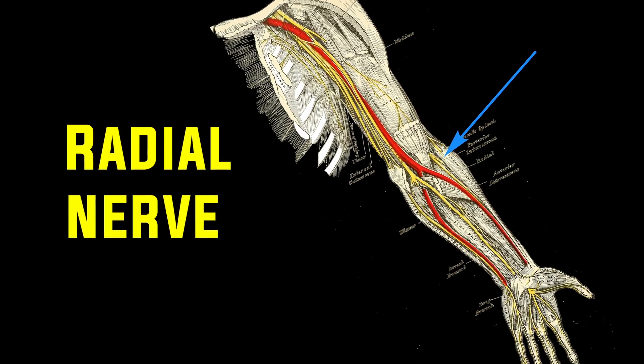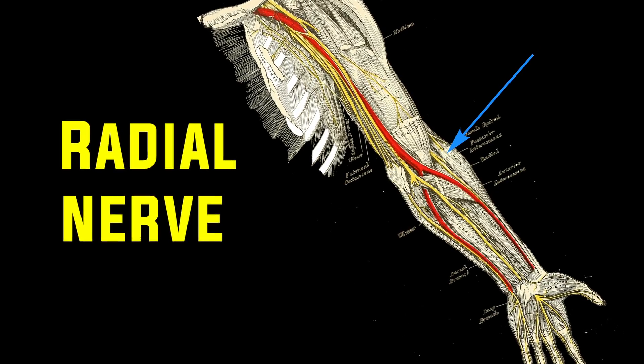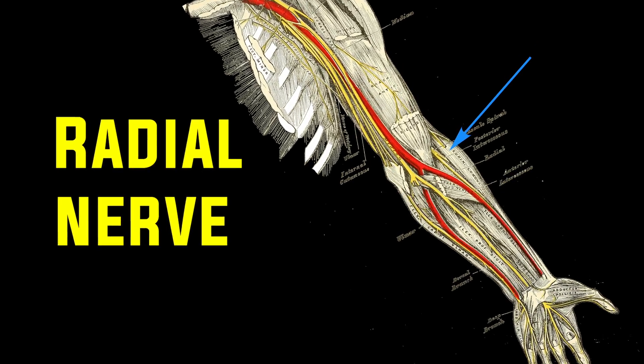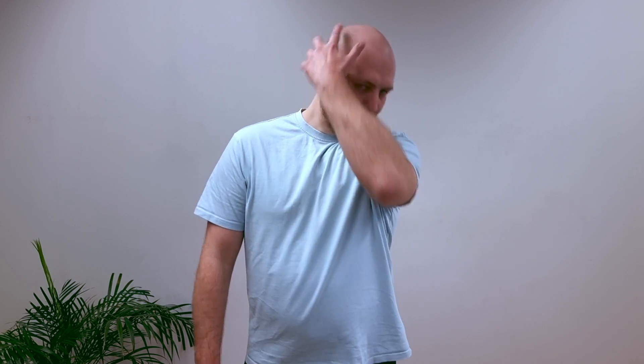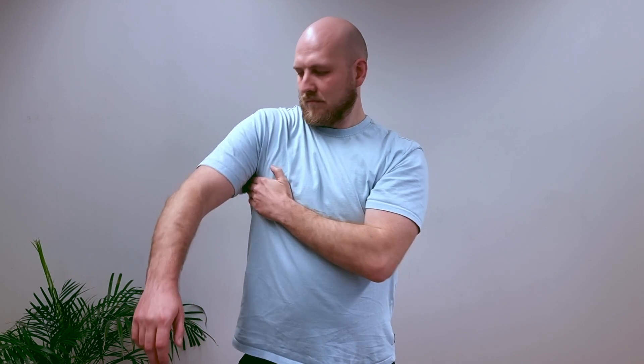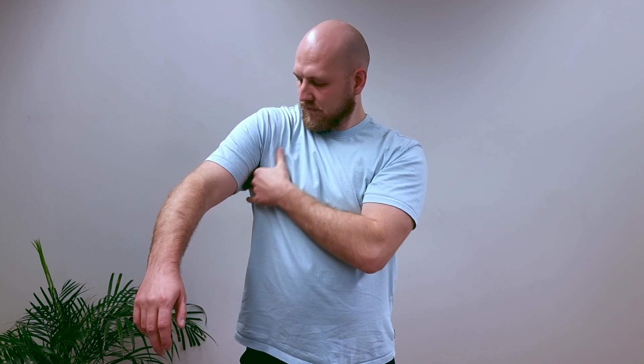The next nerve we are testing is called the radial nerve. It runs from the head down the neck, under the collarbone, to the back side of the arm, then to the outside of the forearm, and from there to the first three fingers.